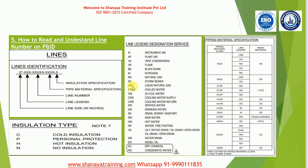Similarly, LNG is liquefied natural gas. CHW is chilled water. GW is glycol water. WS is service water. DW is drinking water. RW is rain water. WF is water for fire fighting. These line designations are used on every line, and with them we can understand what process fluid is flowing inside the line.